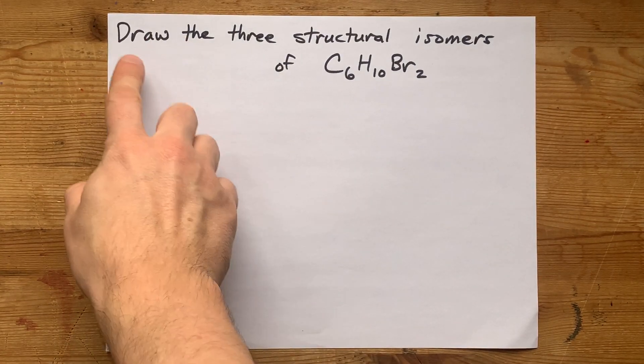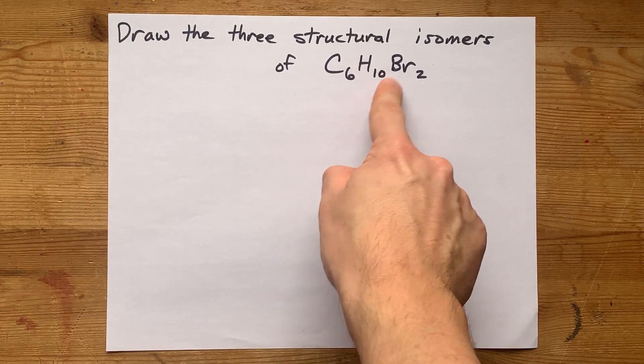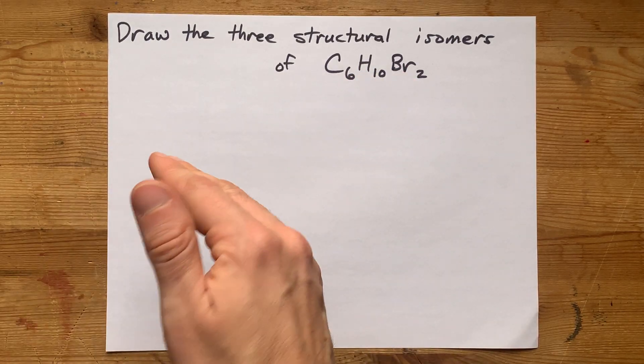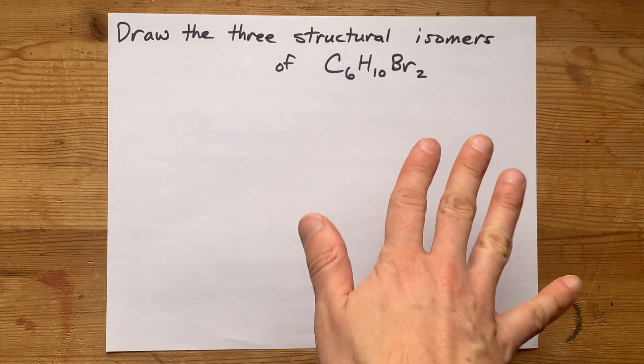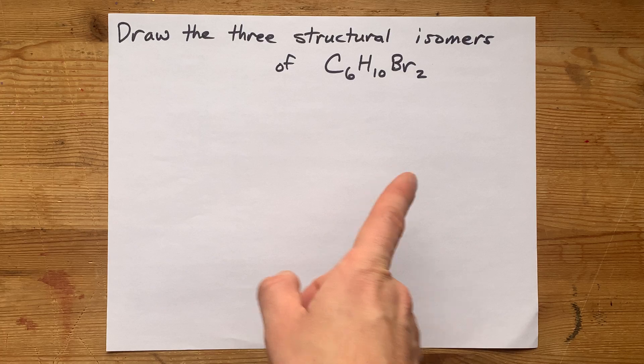A student asked me to draw the three structural isomers of C6H10Br2. This was asked by their teacher. It is a terrible question because there are more than three structural isomers for this formula.